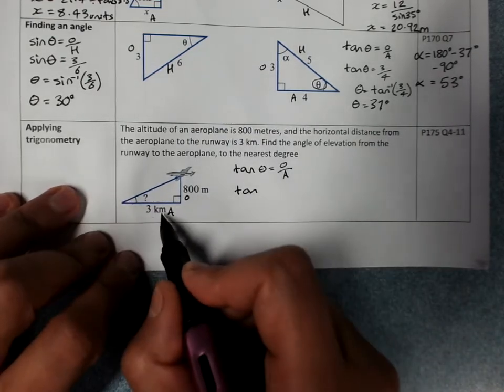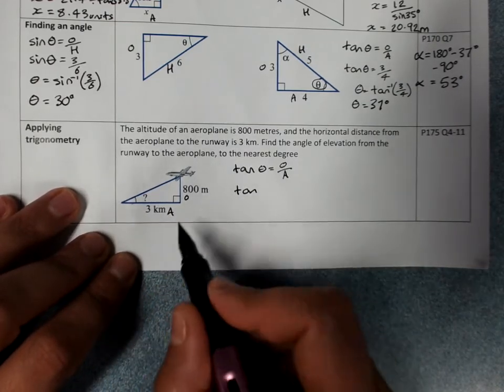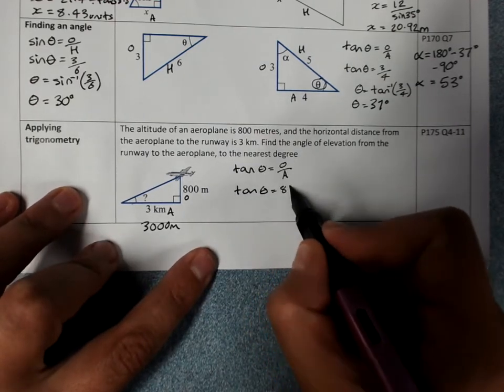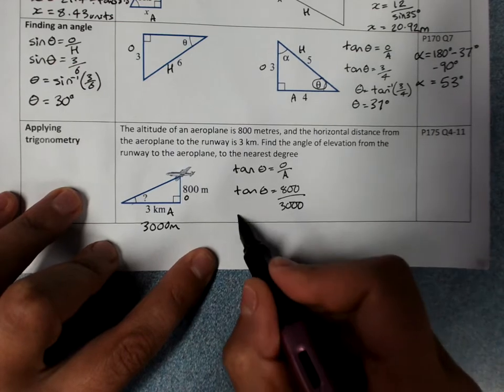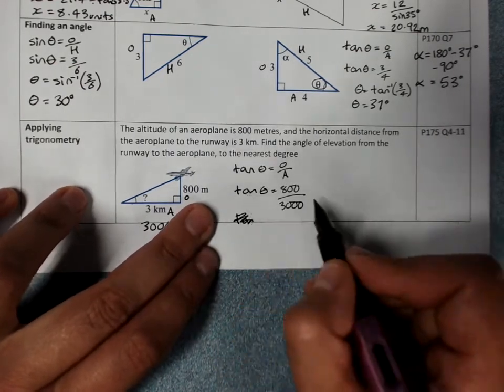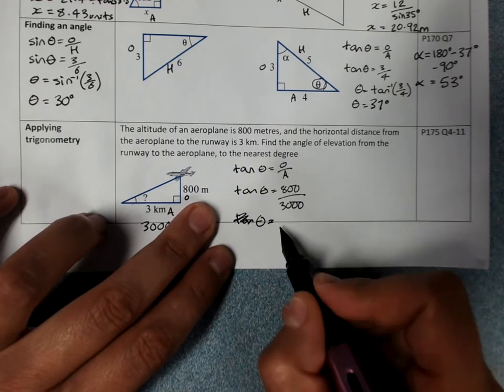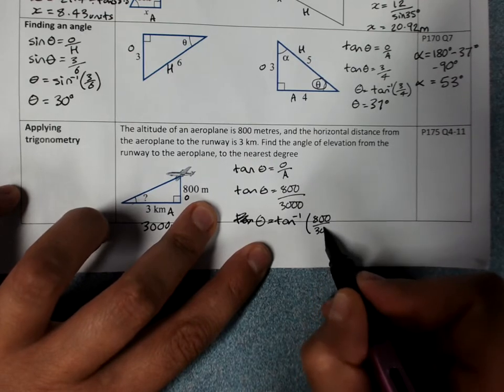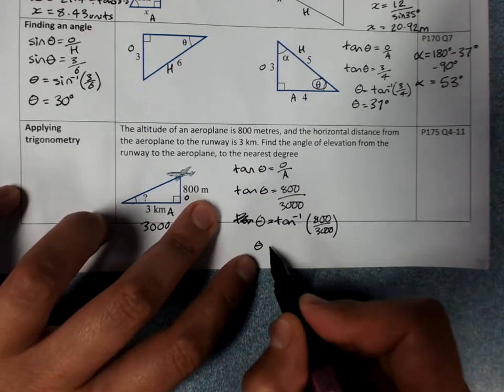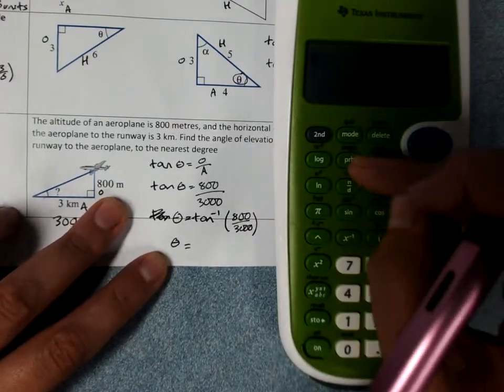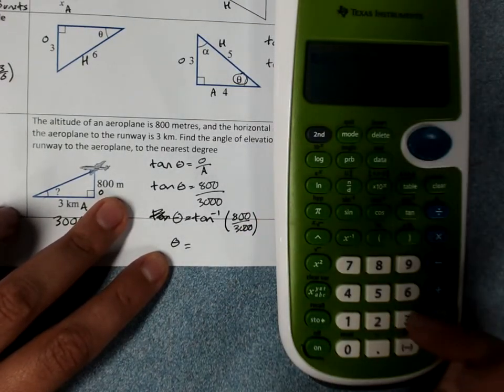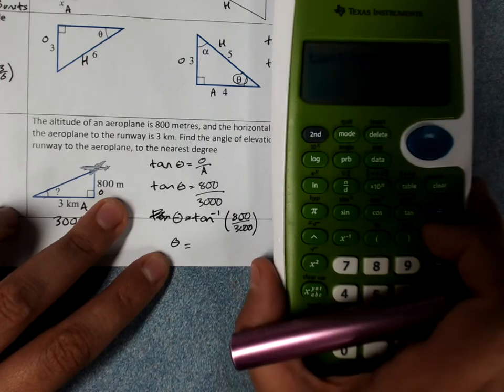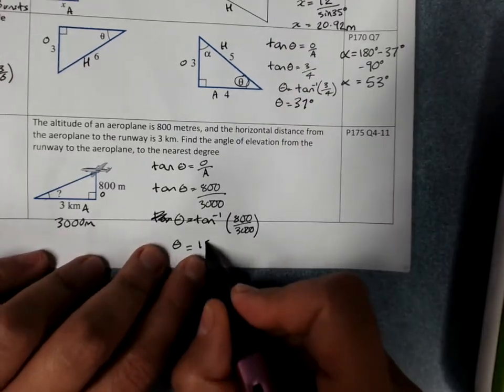Be careful because this is meters and this is kilometers. So we better change one of them. So we'll make that 3000 meters. Rearrange to get theta on its own. And use our calculator. 14.9 to the nearest degree, 15 degrees. There we go. There's our C-I-CAN.